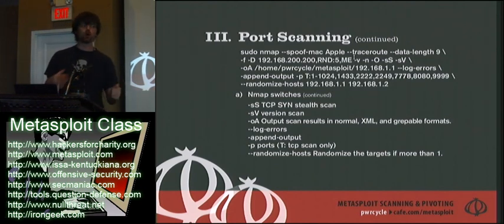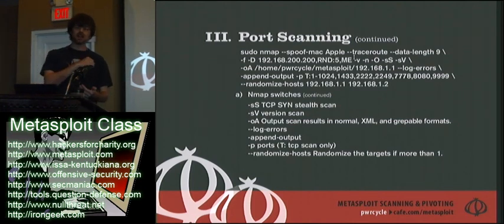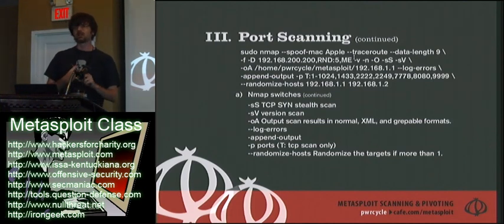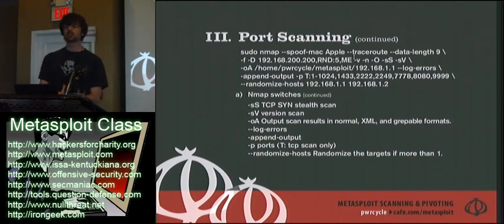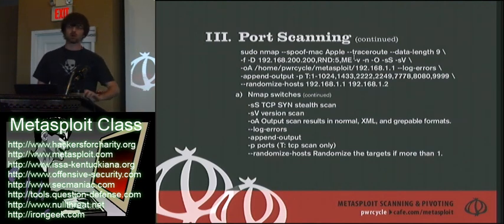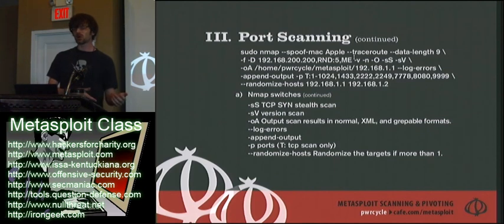Dash -p is the ports you want to scan. If you put a capital T and a colon in front of that, it tells Nmap you only want to do a TCP scan. Depending on verbosity, Nmap will try TCP, UDP, and ICMP to figure out what's going on. For Metasploit, you're going to exploit and get a shell back, and that shell requires a TCP connection. So I only want to look for TCP ports — why not only look for TCP to begin with?